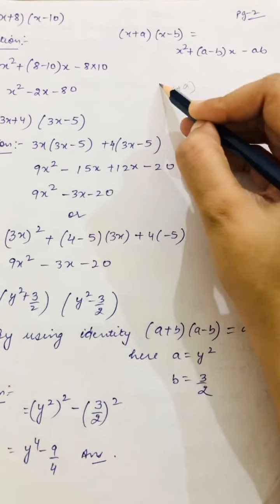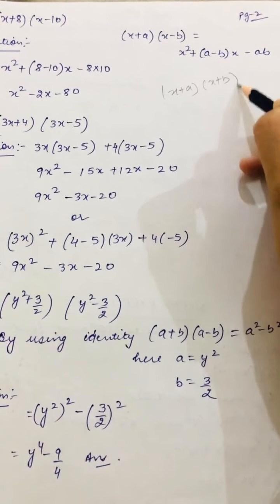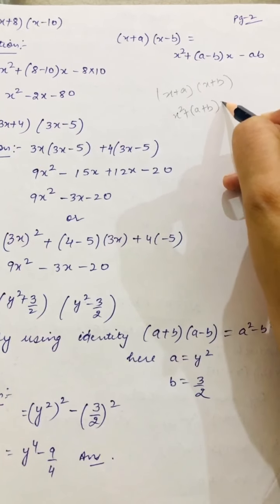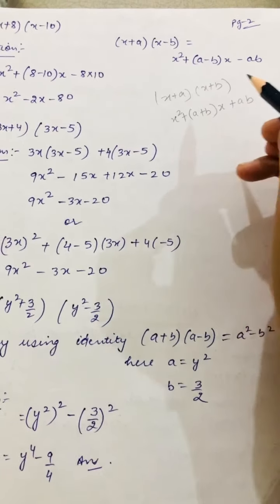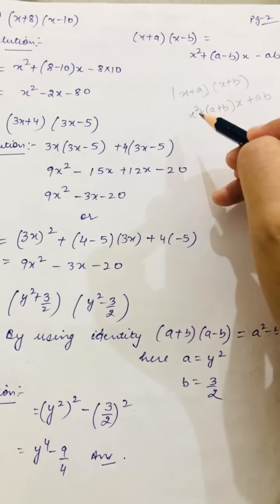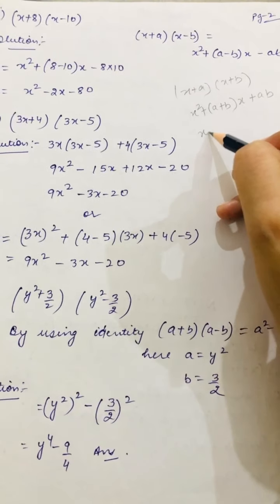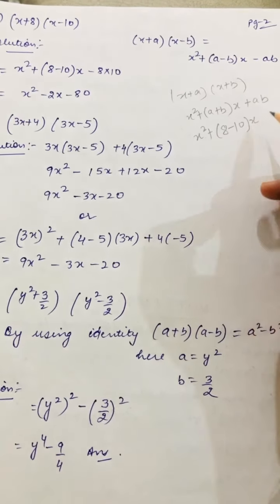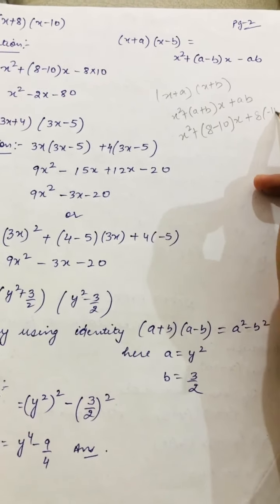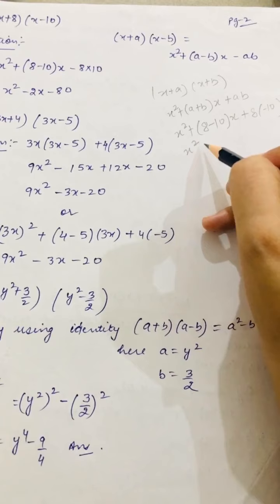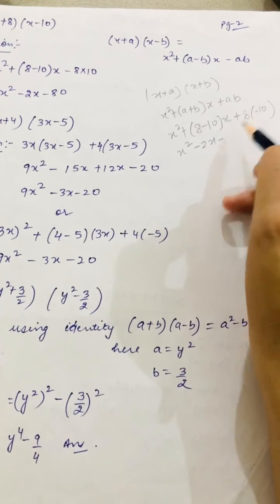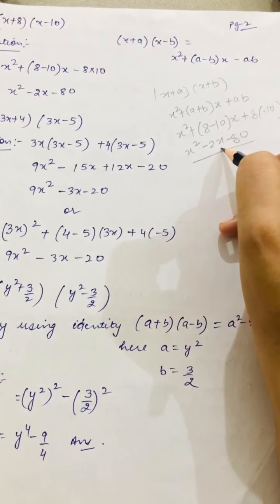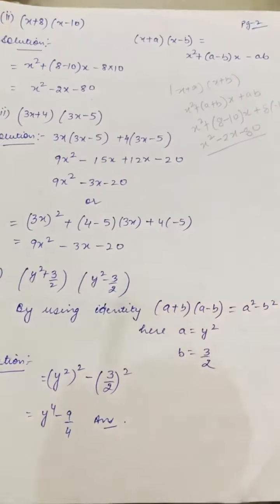This is x². 8 minus 10. Like, 8 is a and 10 is b. (8-10)x minus a×b. You can also say it like this: keep the same formula, the (x+a)(x+b) formula. What was the formula? It was x², then (a+b)x, then ab. This was the formula, right? You keep it the same. Just change what? Where you have x², it's x². What is a? A is 8. What is b? B is -10. So this will come.